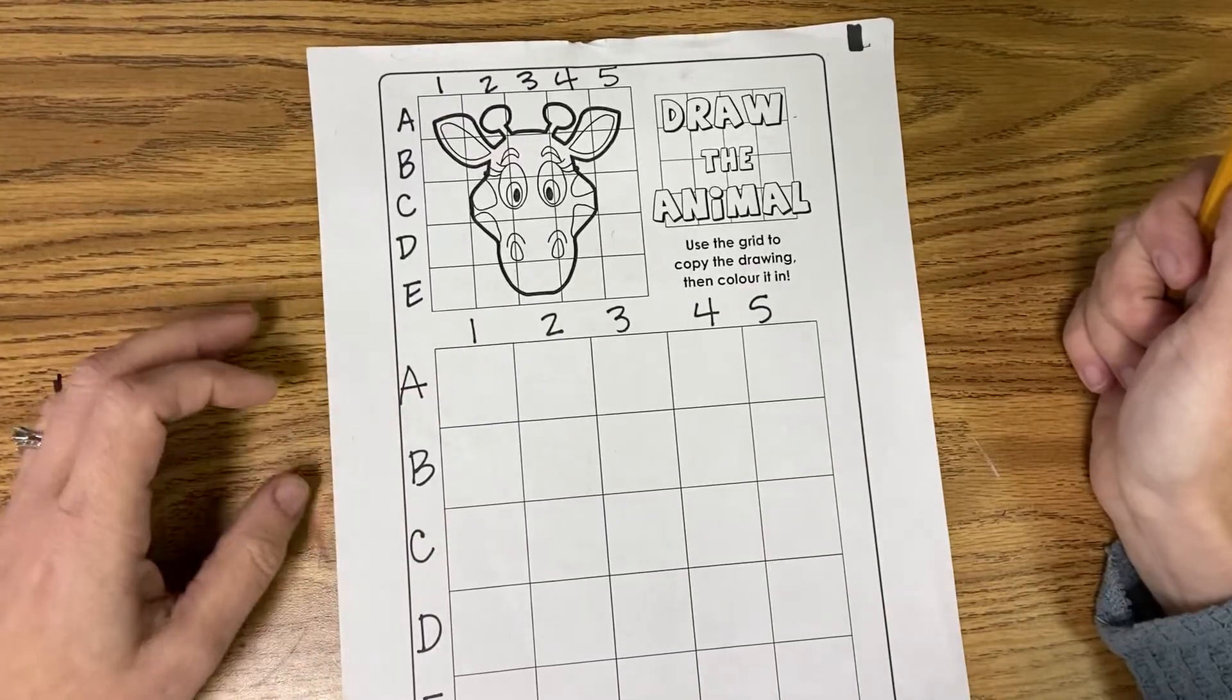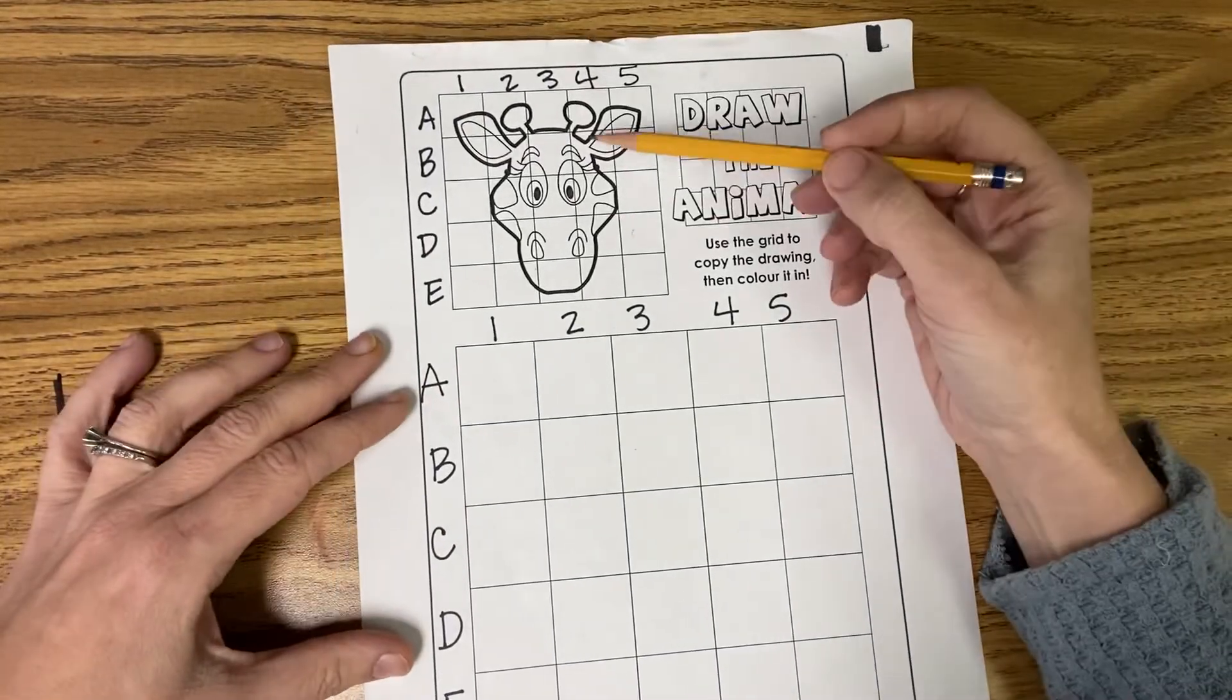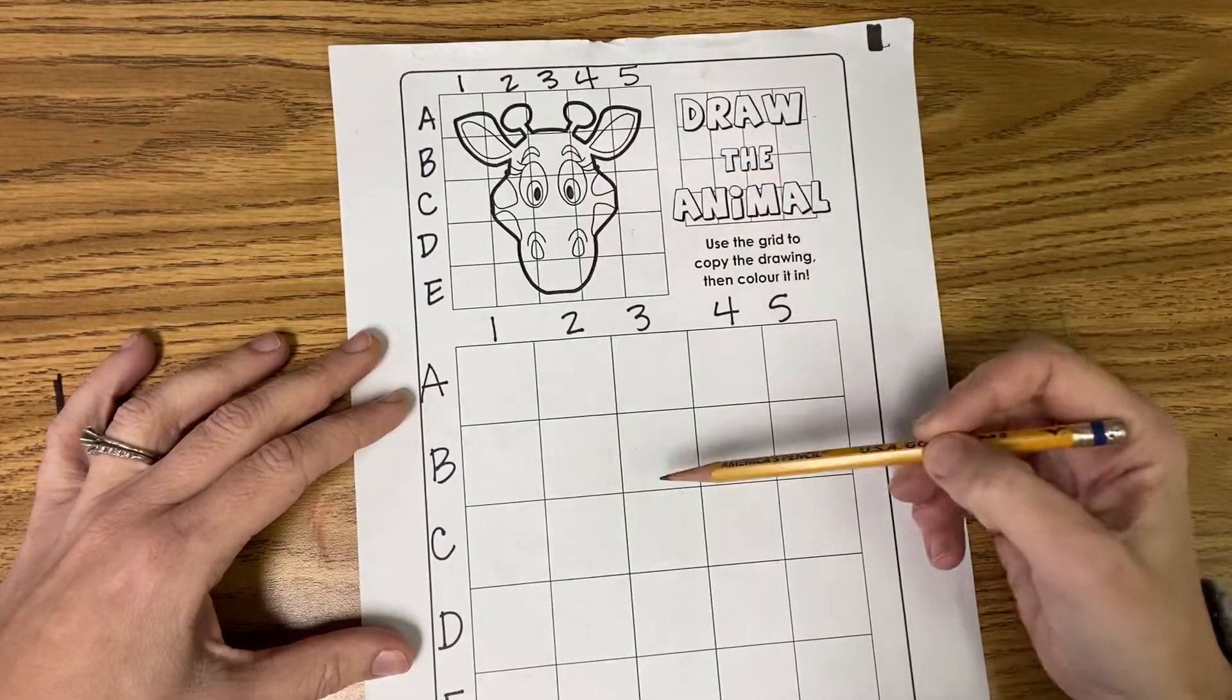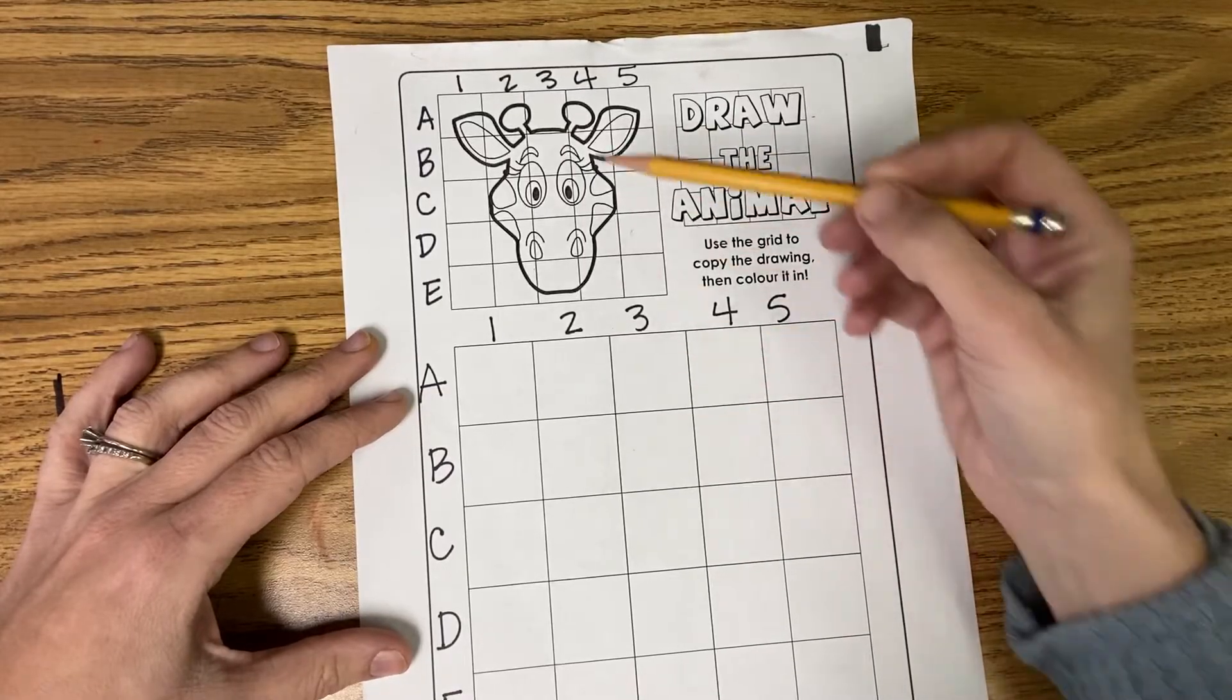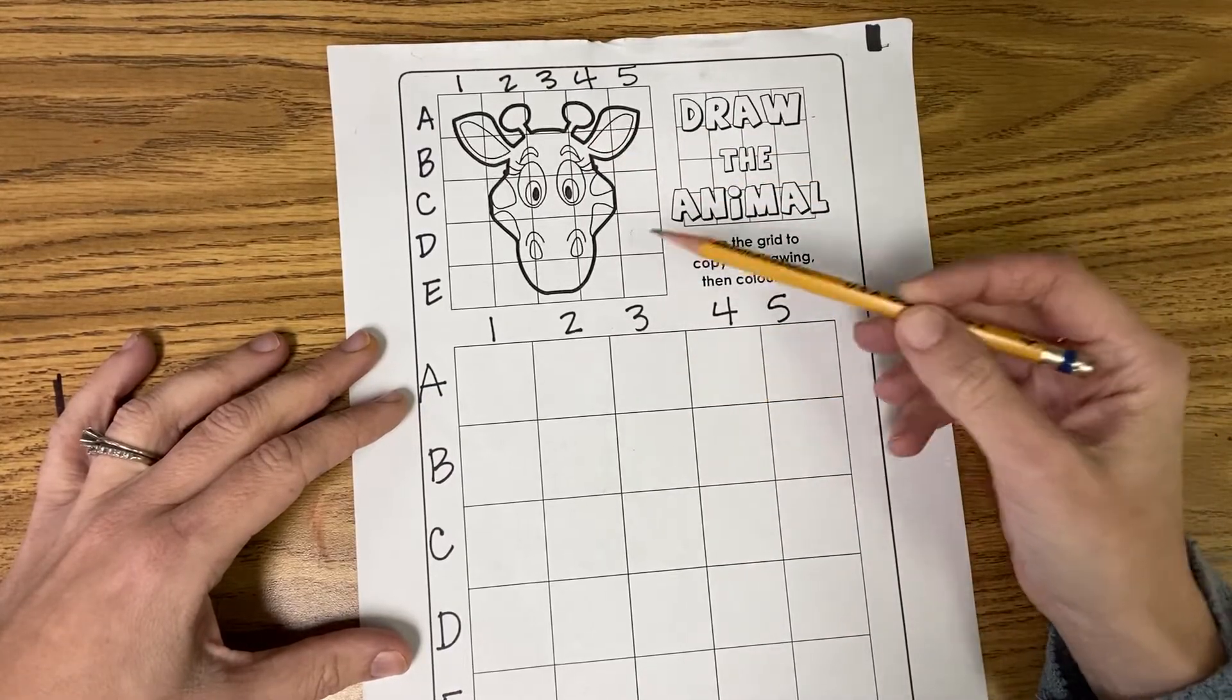So if we're looking at this grid up here at the top, we want to draw this giraffe but we want to draw it down here and you can see that this grid is a lot bigger than this grid, right?